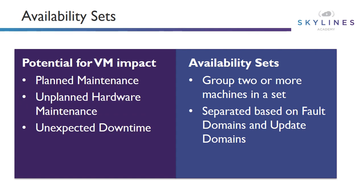And then finally, we have unexpected downtime. This is when there's a catastrophic failure to the underlying hardware, and your VM is shut down immediately — not gracefully — and the VM will eventually be powered on another machine, but your application will receive an outage.